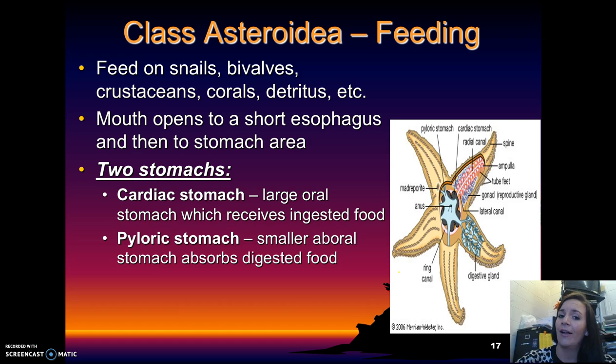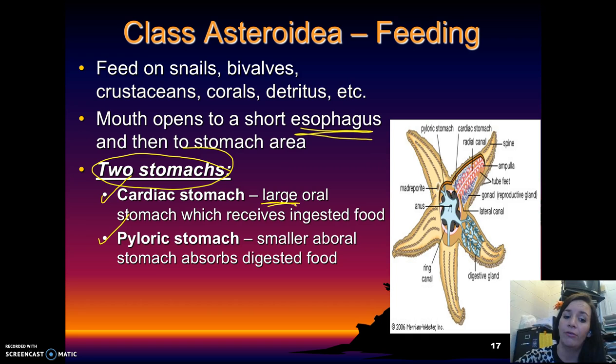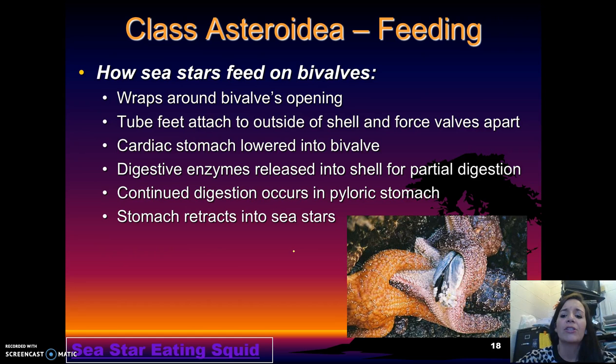They feed on snails, bivalves, crustaceans, coral, detritus, etc. — quite a bit of different stuff. Their mouth opens to a short esophagus and then to the stomach area. They do have two stomachs: a cardiac and a pyloric. The cardiac stomach is the large oral stomach which receives the ingested food. The pyloric, on the other hand, is smaller and aboral — it's the aboral stomach and it absorbs the digested food.